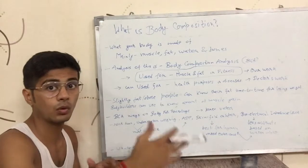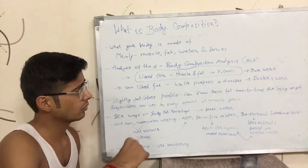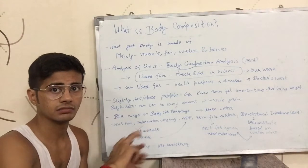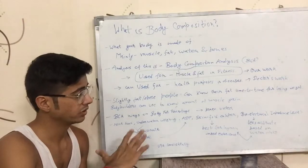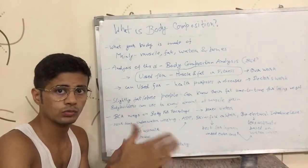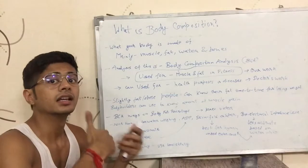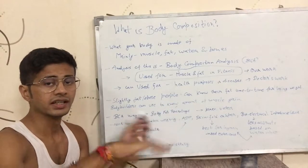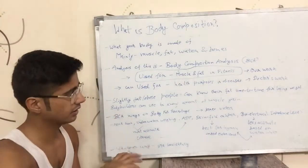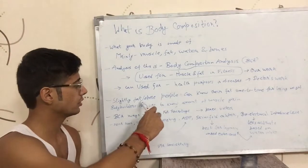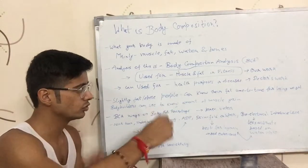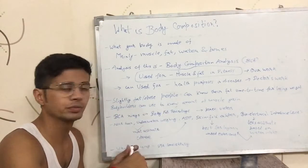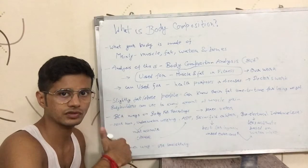Let's say there is a slightly fat or obese guy. He gets his BCA done and finds out he has 40% body fat. He needs to lose weight, so he loses weight for two months and then gets the BCA done again. He comes to know that he is now at 34% body fat, so he gets to know that he is progressing — losing fat or perhaps gaining muscle simultaneously. Basically, you can get to know if you are progressing and what your current status is. Bodybuilders use BCA to know if they have gained muscle or lost fat.